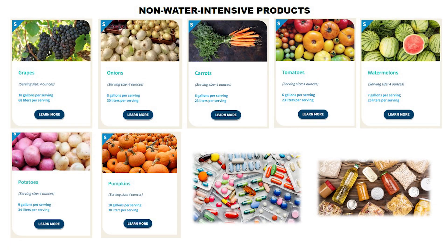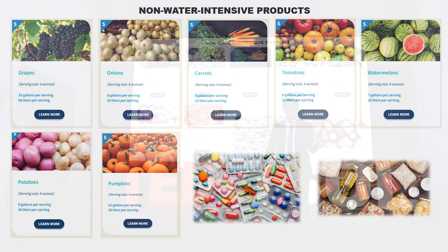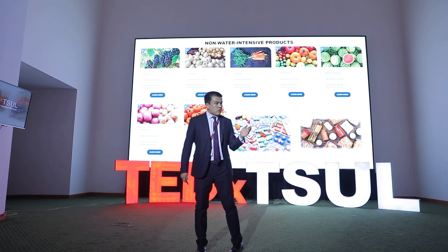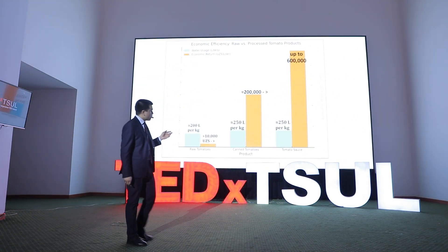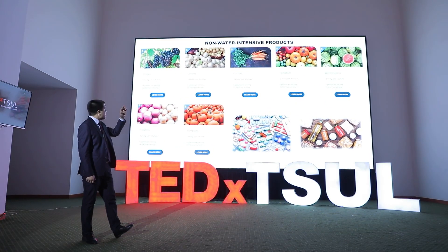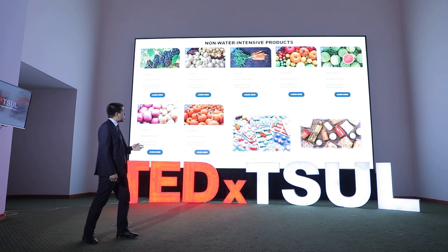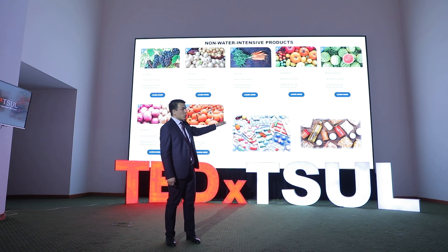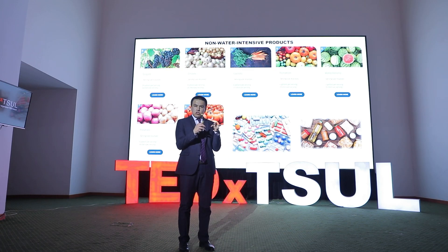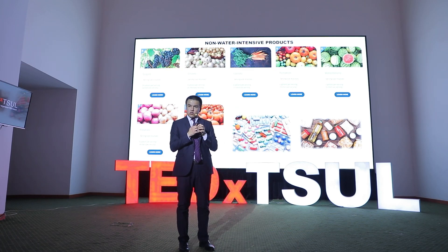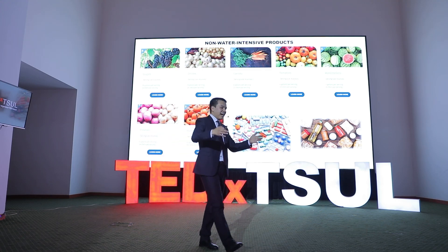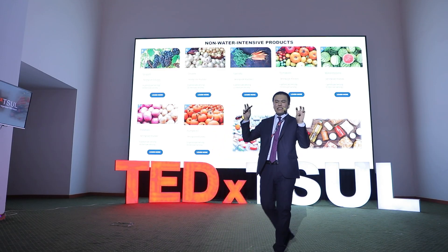Here comes a question: what are raw water-intensive products? Well, there is a list of products that require the least amount of water. The first is grapes, then onions, carrots, tomatoes, watermelons, potatoes, pumpkins, and of course pharmaceuticals together with processed food — where raw materials could be exported from other countries, processed locally, and then sold abroad as a high value-added product.